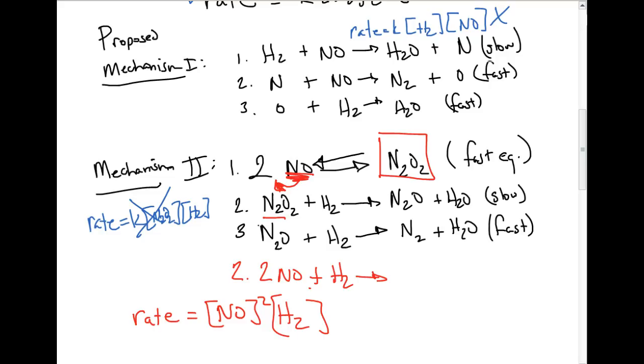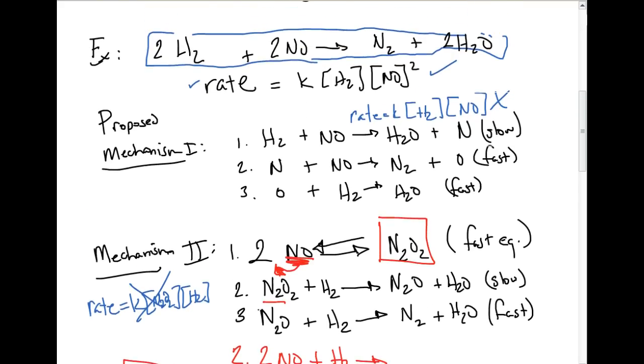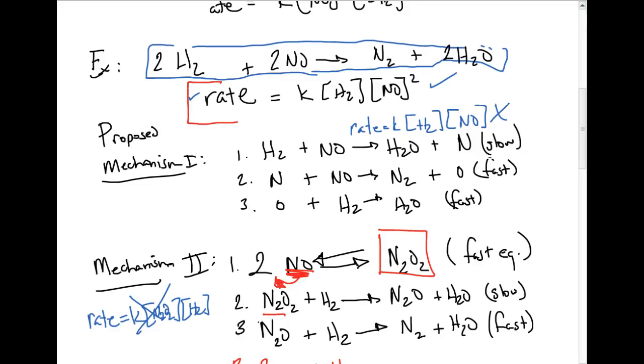And does this match the rate law that was determined experimentally at the top? And let's run it up here and look and there is the rate law. It doesn't matter if the products are out of order, the NO second order was listed second, no big deal.